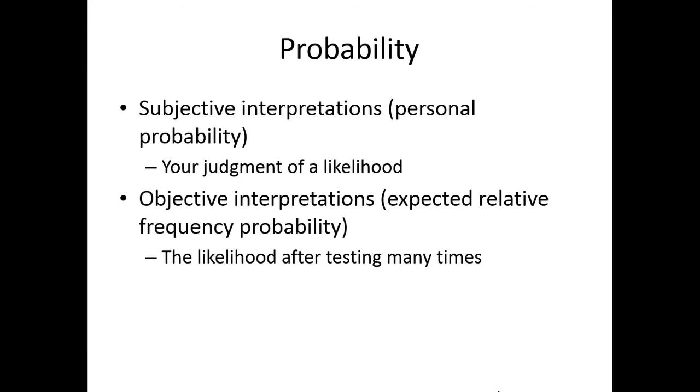Judgments of probability are particularly poor. Otherwise, no one would ever gamble. That's how people get good at things like poker, because they're thinking in terms of probability. But as a researcher, we're supposed to move towards objective interpretations, a relative long-term outcome. If I did this study a hundred times, how many times would I get this result?